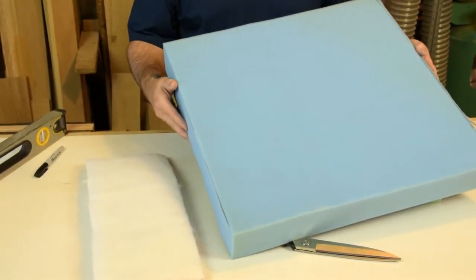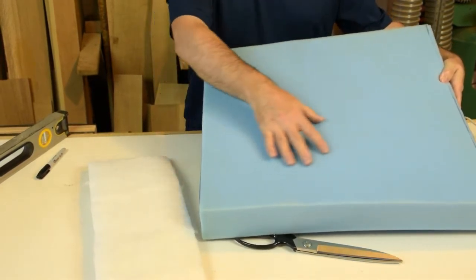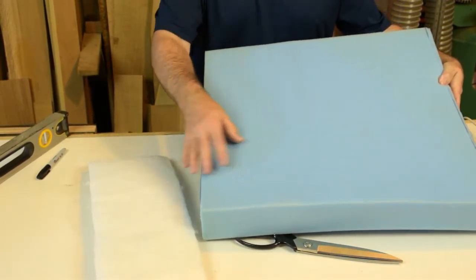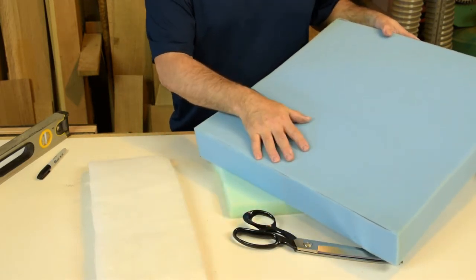So you can imagine trying to cut a dense piece of upholstery foam that's two to three inches thick would be a real challenge with just scissors. So if you have to make a cut like this, I would recommend taking it over to the bandsaw.